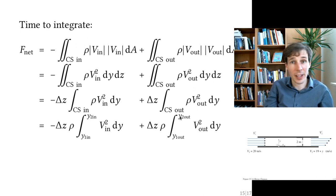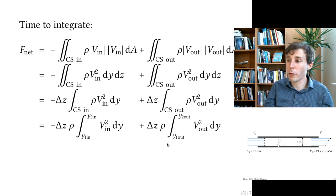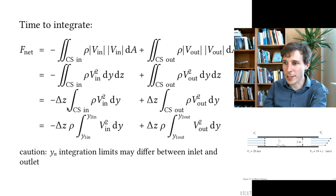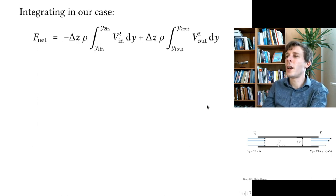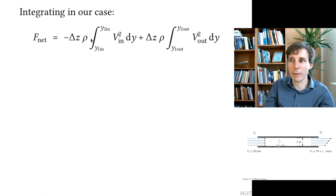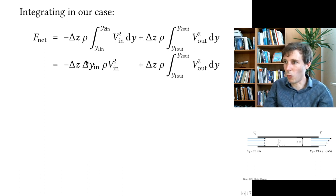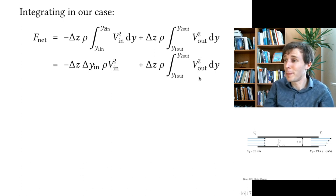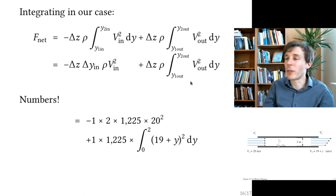Taking this equation to the next slide: one of the two integrals is easy to carry out — the integral for v_in — because v_in has a uniform distribution and does not change with y. So v_in squared comes out of the integral, leaving just the integral from zero to y2 of dy, which becomes delta_y. For v_out, however, it must remain inside the integral because v_out is a function of y, not a constant.